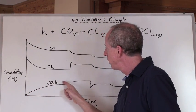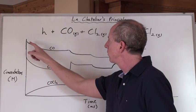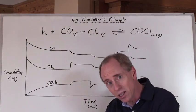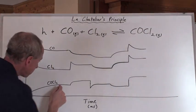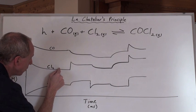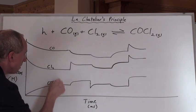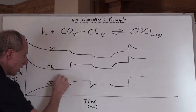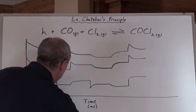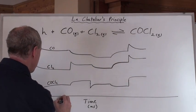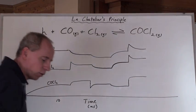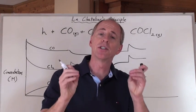So here we go. We're starting to accumulate COCl2 and decreasing in concentrations of the two reactants until we come to a point where the concentrations are remaining constant over time for these chemicals. So right here at about 10 milliseconds or so, that's where we have now established equilibrium.